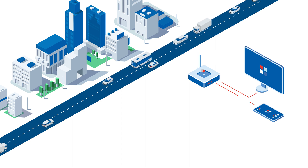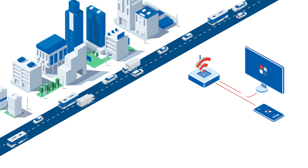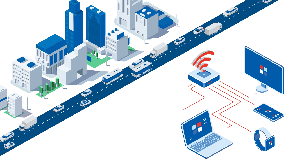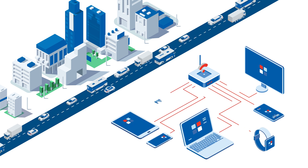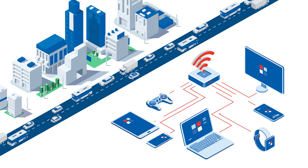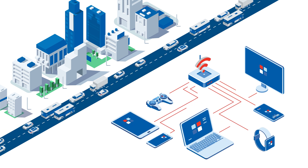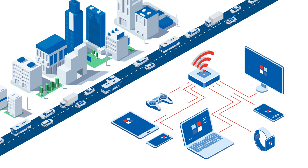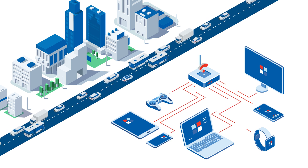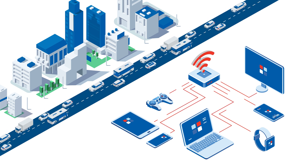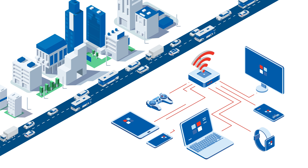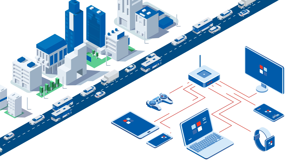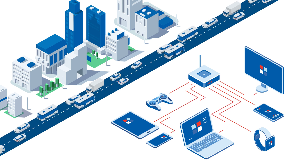In today's world, we rely on numerous devices for our everyday needs, from our phones and computers to streaming services and smart home technology. Your internet is shared by all these devices in your home or business. When you have many devices on your network or you are running many applications, you may notice a difference in speed.